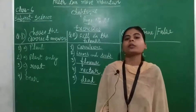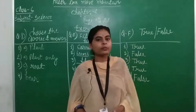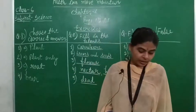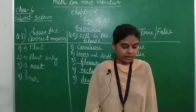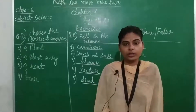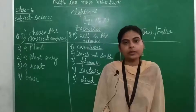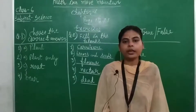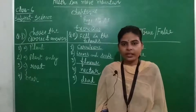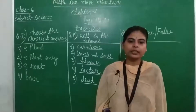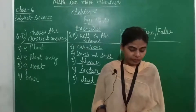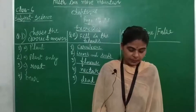Honey is obtained from — plants, animals, markets, or both? Tell us. Animals. It is an animal product — we classify bees under insects, which are animals. So we click on animals. Very good.